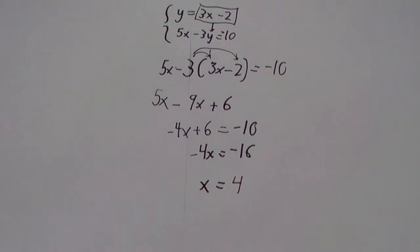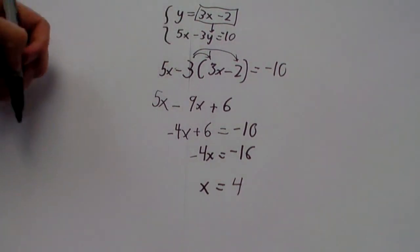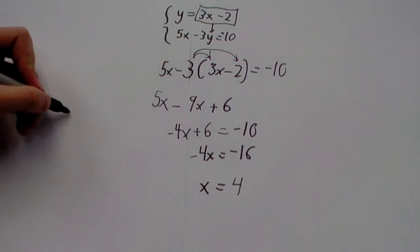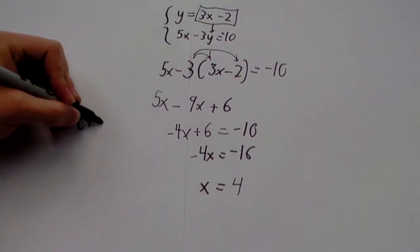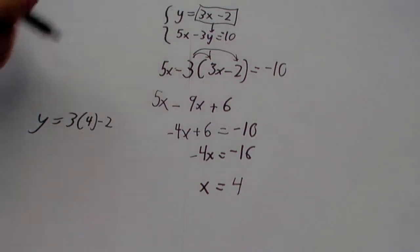Alright, now that we know x equals positive 4, we can just plug that in for x in either of these equations. I'm going to take this one since we've already solved for y. 3 times 4 minus 2 is y, because y is 3x minus 2.